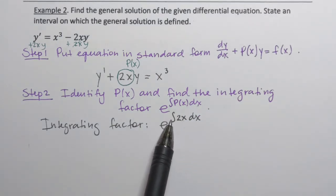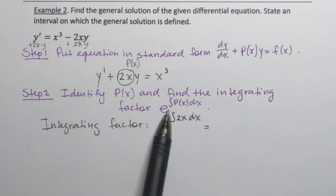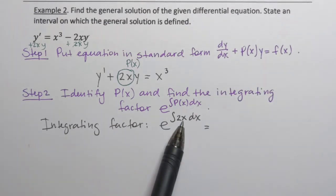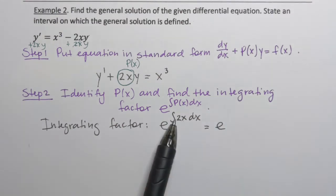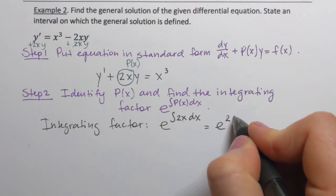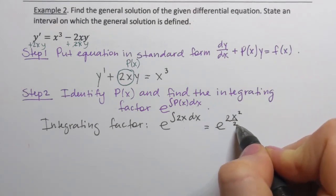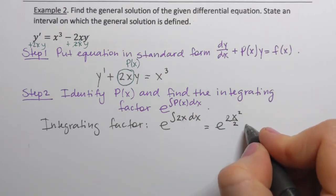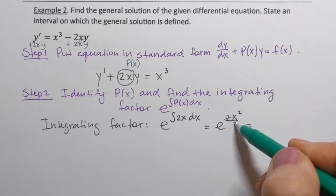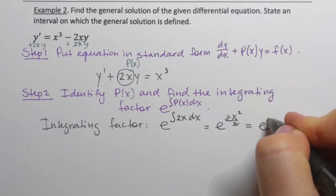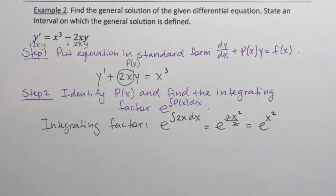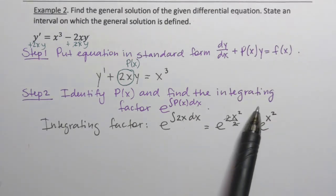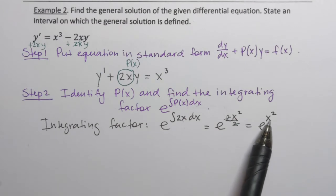The integration will be easy here. The integral of 2x is 2x squared over 2, which is the antiderivative of x. We're not going to write plus c, so the 2 cancels and we end up with e to the power x squared. We won't be able to simplify it any further, so e to the power x squared is our integrating factor.